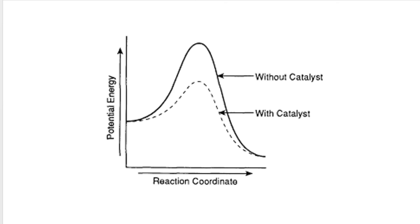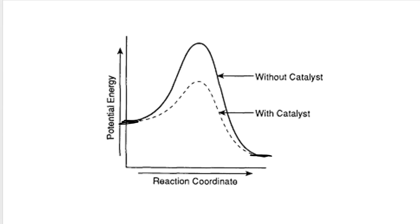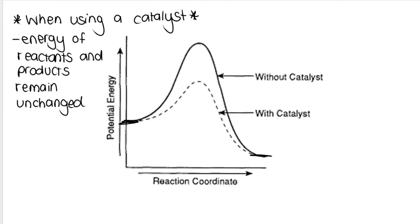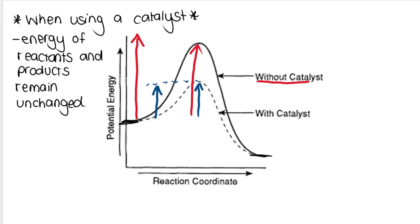On a potential energy diagram, the solid line represents the reaction without a catalyst and the dotted line represents the reaction with a catalyst. Notice that both lines start and end at the same place — the energy of the reactants and products remains unchanged. However, the peak of the dotted curve is much lower than the peak of the solid curve. This shows that the activation energy with a catalyst is smaller than without one, clearly demonstrating that catalysts lower the activation energy.